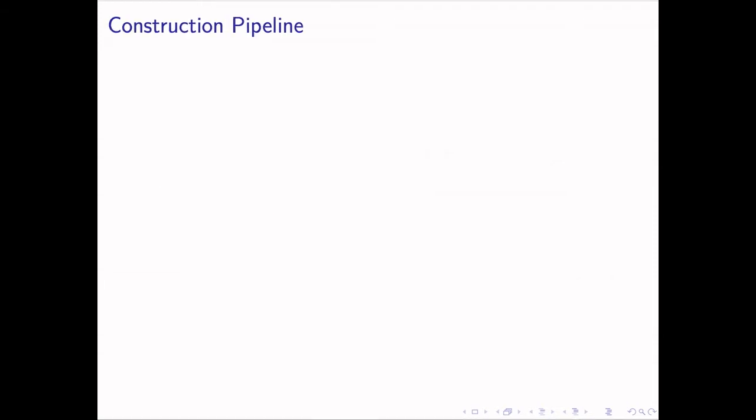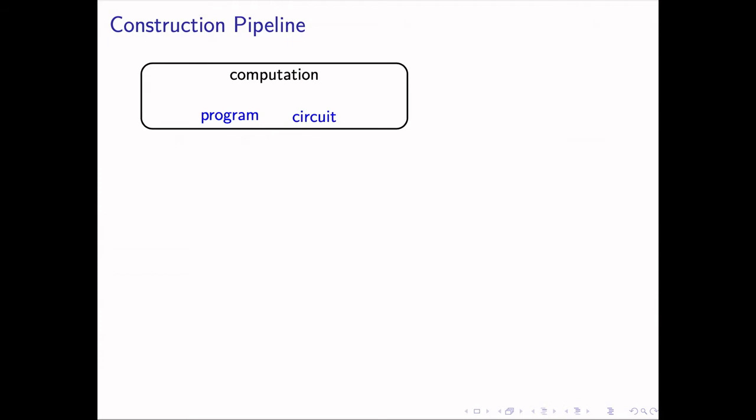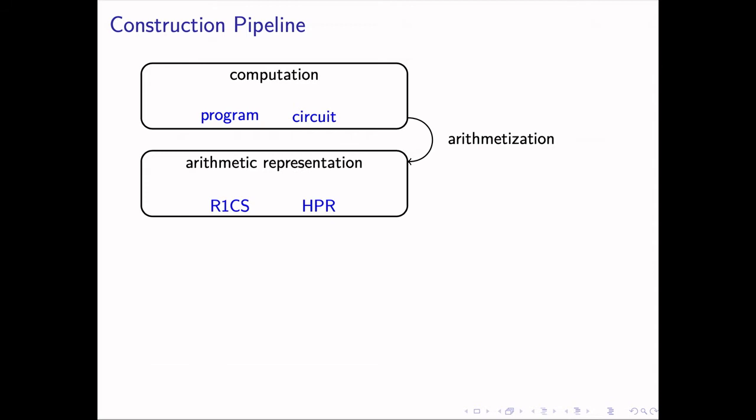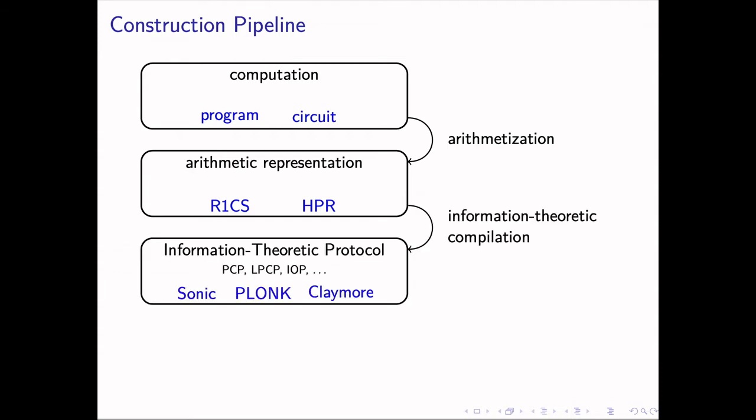Recently, many SNARKs have been constructed. Most constructions can be fit into the following pipeline. This pipeline starts from the computation, the c in the previous slide, which is mostly described by a program or a circuit. The first step, called the arithmetization, transforms this computation into a form that is more friendly to mathematicians. R1CS and HPR are popular candidates for this step. The next step, which is usually the most complex step, is to design an information theoretical protocol for the arithmetic representation. This protocol is designed in the context of an idealized model, for example, PCP, linear PCP, IOP, and so on.